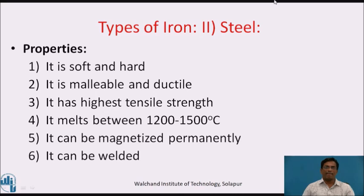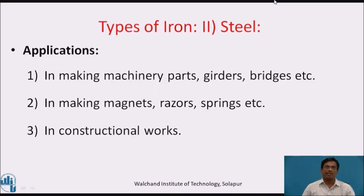Properties of steel: it is soft and hard. It is malleable as well as ductile. It has the highest tensile strength. It melts between 1200 to 1500 degrees Celsius. It can be magnetized permanently. It can be welded. Applications: it is used in making machinery parts, girders, bridges, magnets, razors, springs, and in constructional works.